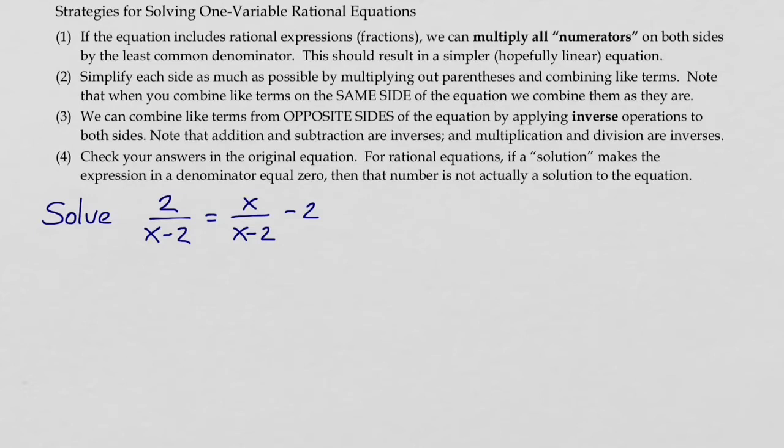The way to do that is to multiply all the numerators by the least common denominator. This example is fairly straightforward because we have two denominators, but they're exactly the same. And so the least common denominator is in fact just that expression.